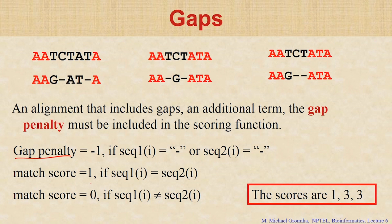The previous alignment we gave the match score and mismatch score. In this case we have a gap, so we need to introduce a gap penalty. So here I put minus 1 if there is a dash either in the first sequence or the second sequence. Then match score is 1, the same as before. So if sequence 1 equals sequence 2, that is a match. If there is a mismatch, you put a mismatch score if sequence 1 is not equal to sequence 2. What is the score for the first alignment?